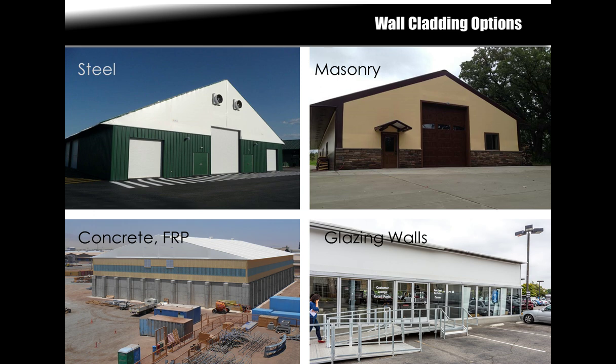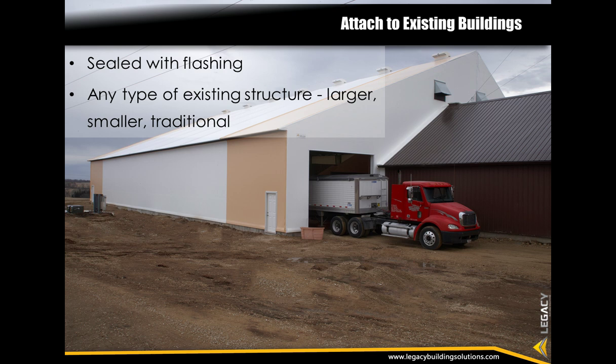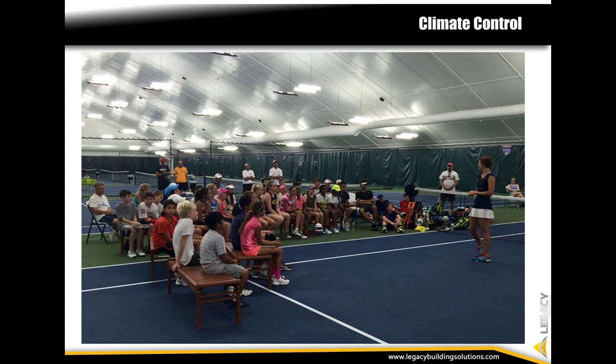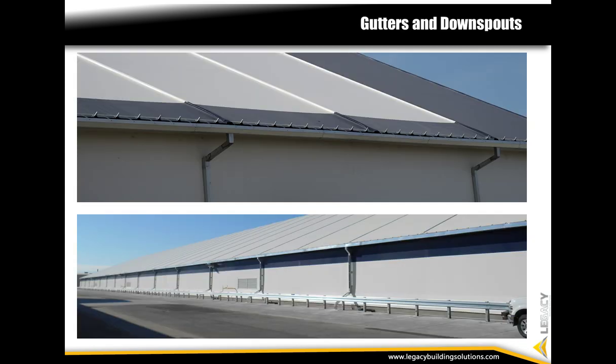For practical and aesthetic reasons, some customers may specify different wall cladding on a fabric structure. Options include steel, concrete, glazing walls, FRPs, and stone. It is also possible to attach a fabric structure to a new or existing building, even if constructed of traditional materials; the buildings are sealed together with simple flashing. If the fabric structure will be shorter, the frame is strengthened to accommodate snow falling off the other structure. For occupied buildings like sports or entertainment centers, a variety of climate control options are available to control temperature, humidity, and light. Mechanical, electrical, and plumbing systems are also available. Water management systems including gutters and downspouts can be added to the overhangs to further direct the flow of moisture.